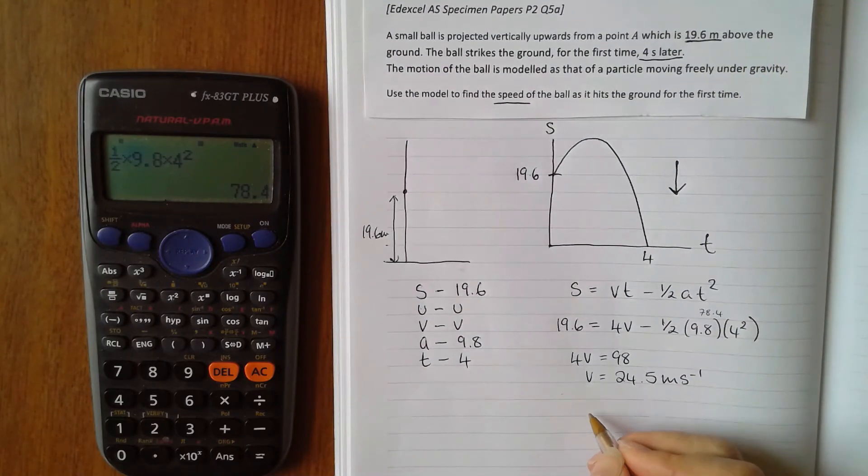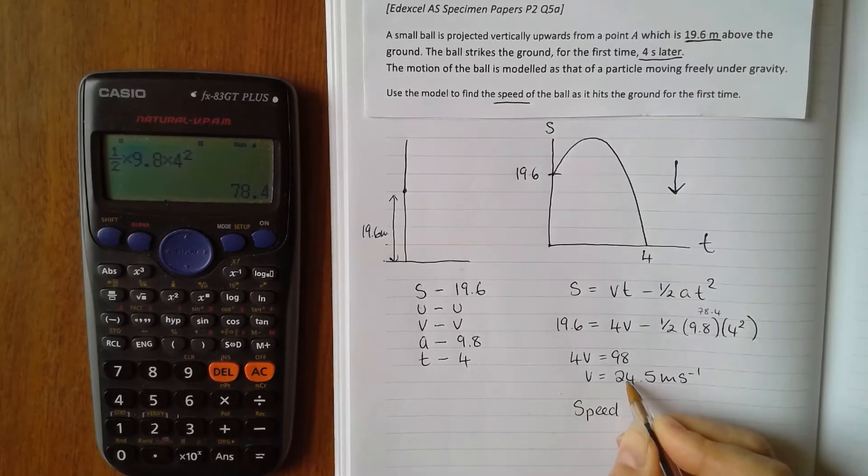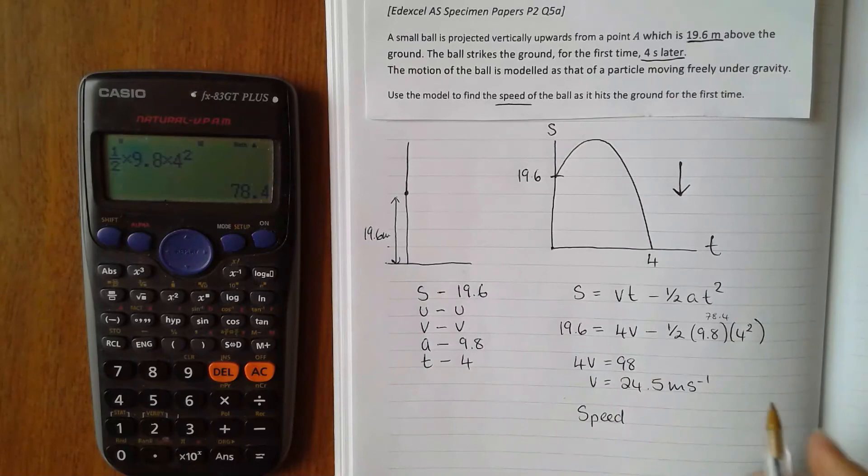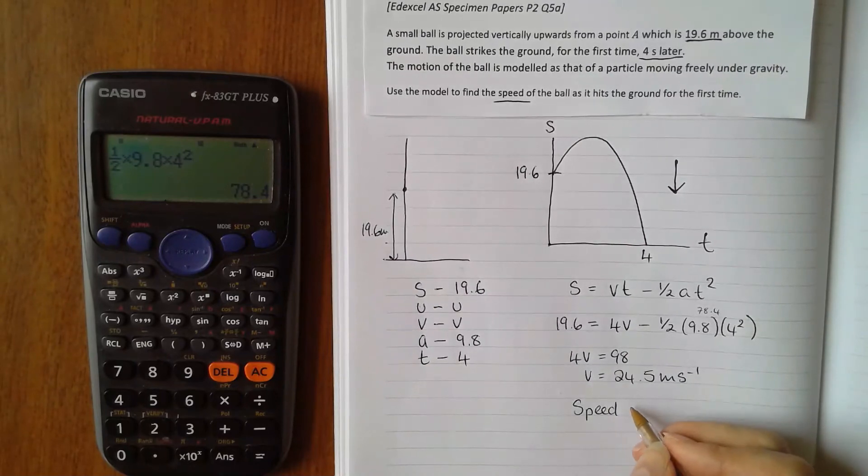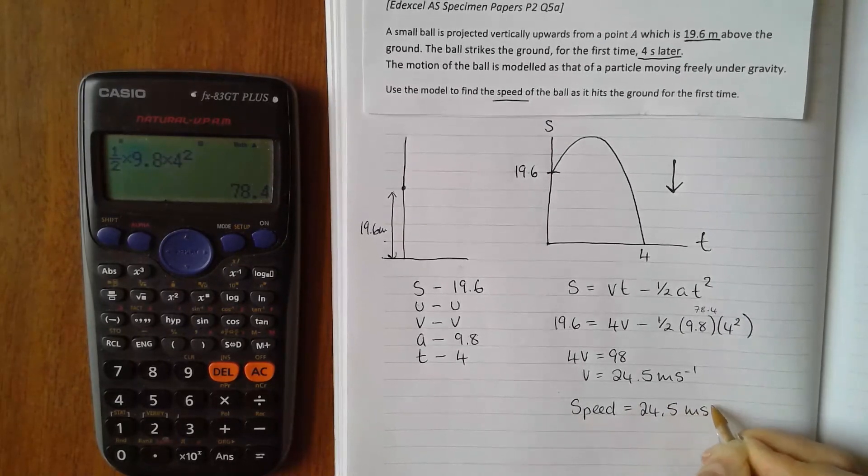So the speed we take whatever is the positive value of this, because it's really just the size of it, the magnitude of it. It's not a vector quantity, so it doesn't take into account the direction. So the speed is 24.5 meters per second.